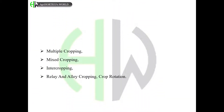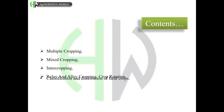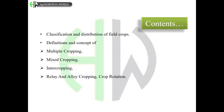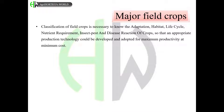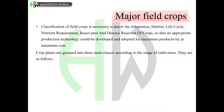In this video we will go through these contents: classification and distribution of field crops, definitions and concept of multiple cropping, mixed cropping, intercropping, relay and alley cropping, and crop rotation. The classification of field crops is necessary to know the adaptation, habitat, life cycle, nutrient requirement, and insect pest and disease reaction of crops, so that an appropriate production technology could be developed and adopted for maximum productivity at minimum cost.